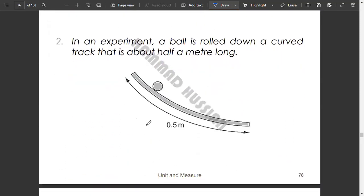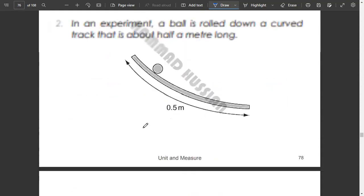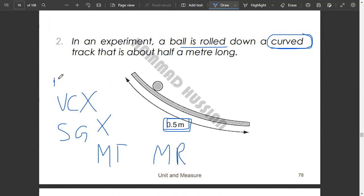In an experiment, a ball is rolled down a curved track that is about half a meter long. Which measuring device would be used to measure the length accurately? One thing here is that the ball is rolled around a curved track. We have studied vernier caliper, screw gauge, measuring tape, and meter rule. Vernier caliper and screw gauge cannot be used because it is a large reading of 0.5 meter. Either you are going to use a measuring tape or a meter rule. What is written? Curved.